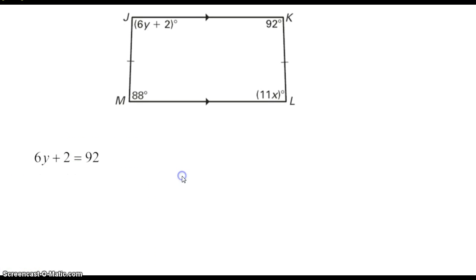All right, so the first thing I did was set 6y plus 2 equal to 92. Solve, and y is 15. To figure out x, I take 88 equal to 11x, and x is 8. So that's an example of angles in an isosceles trapezoid.